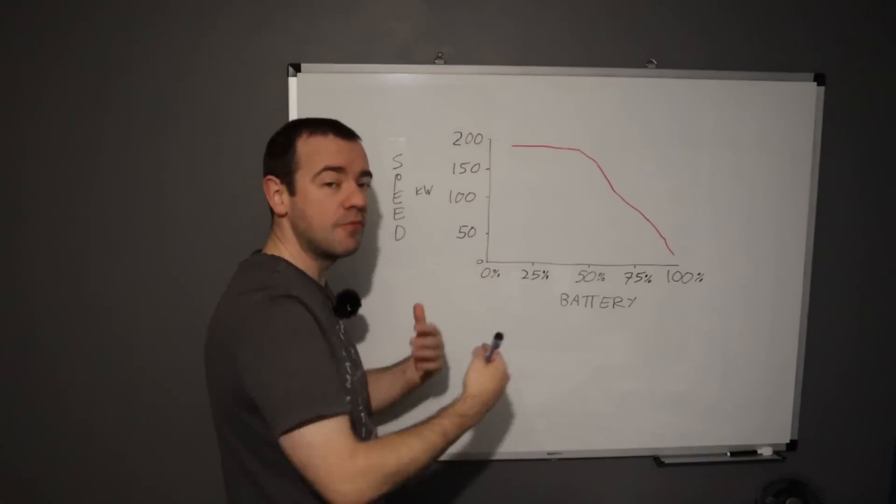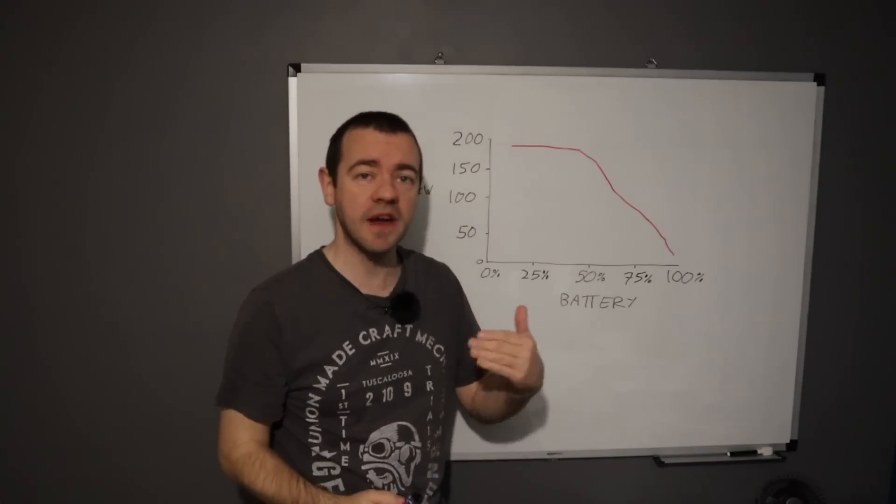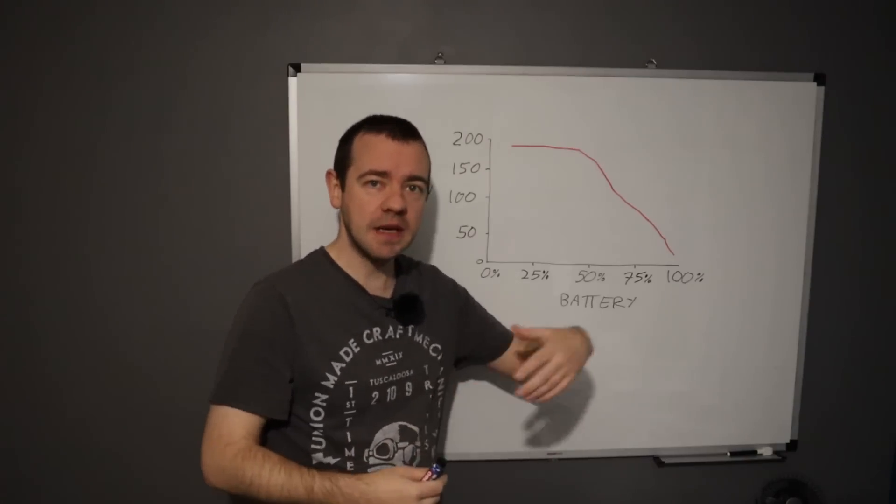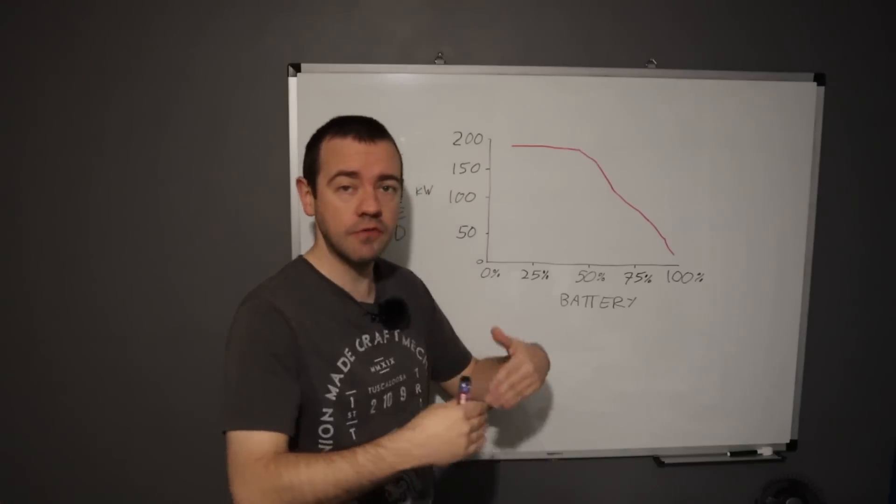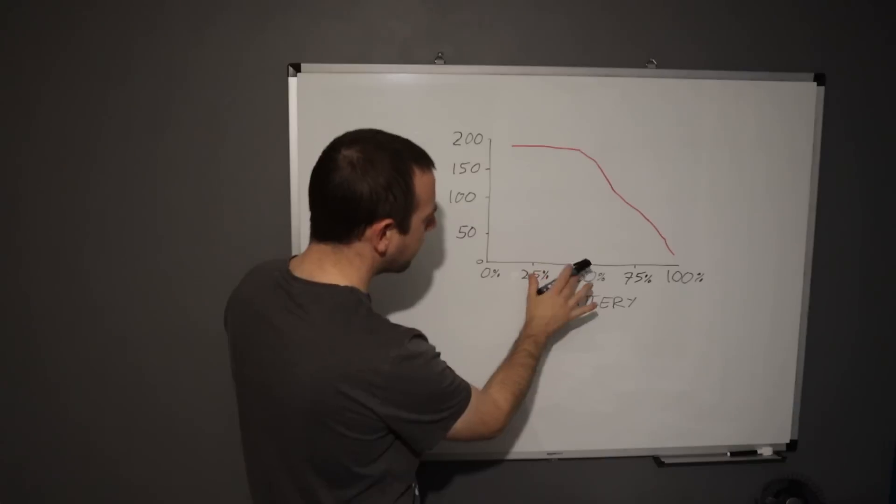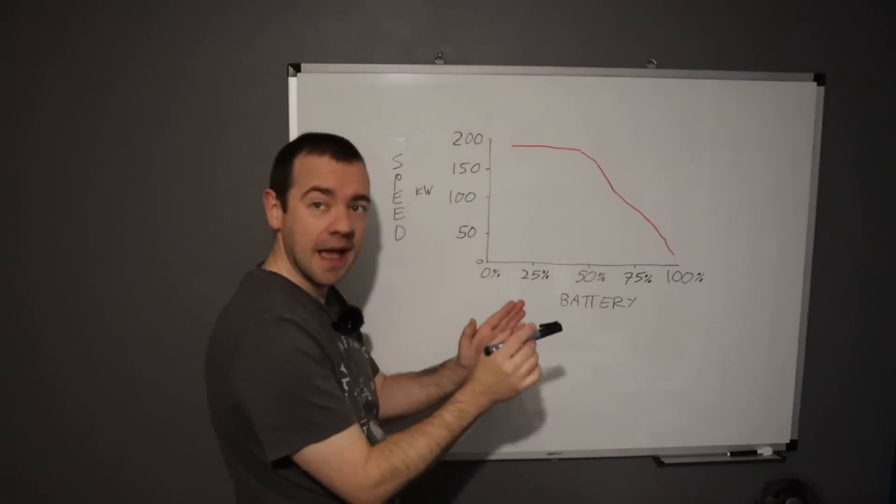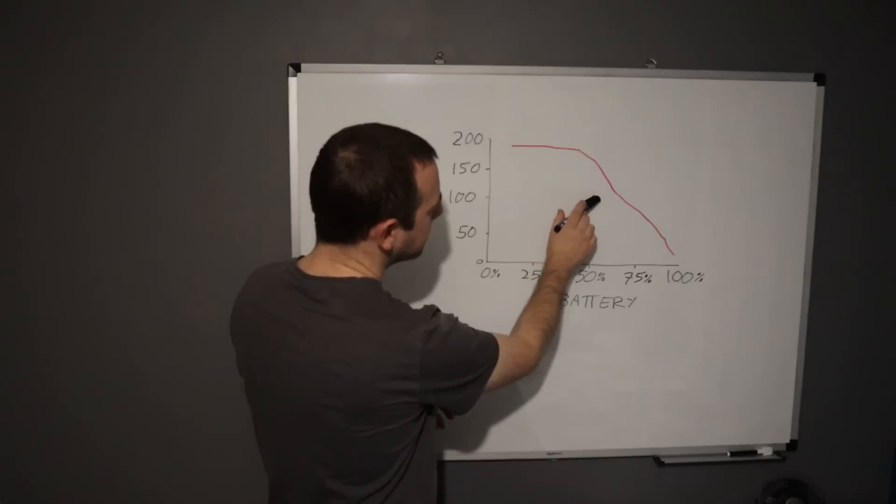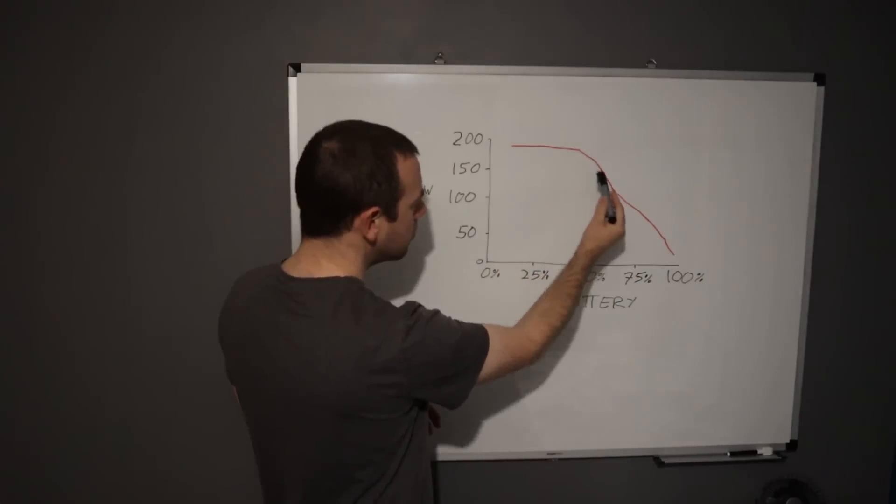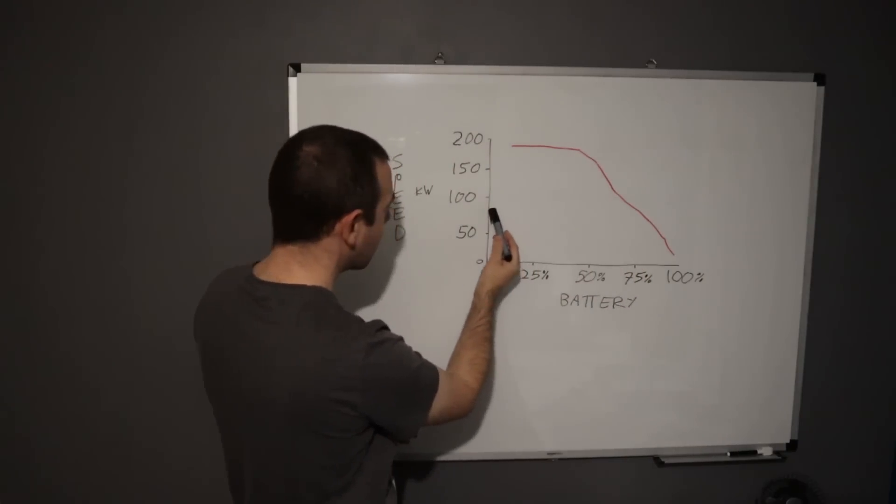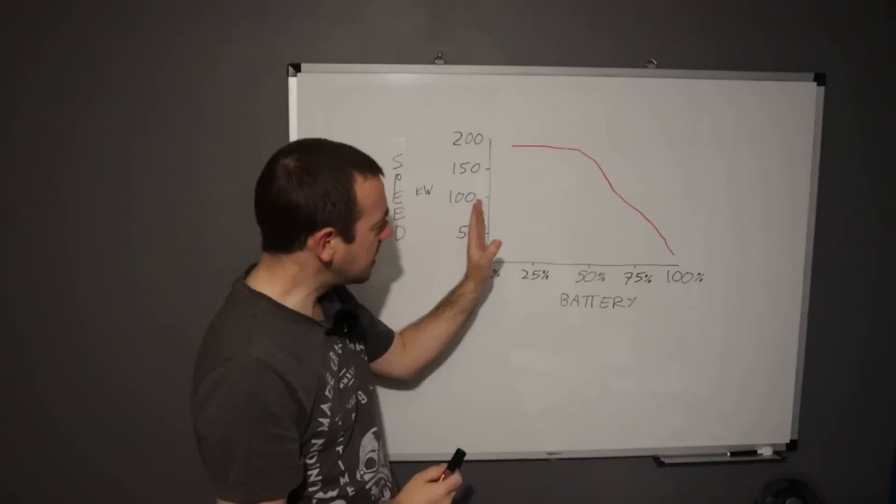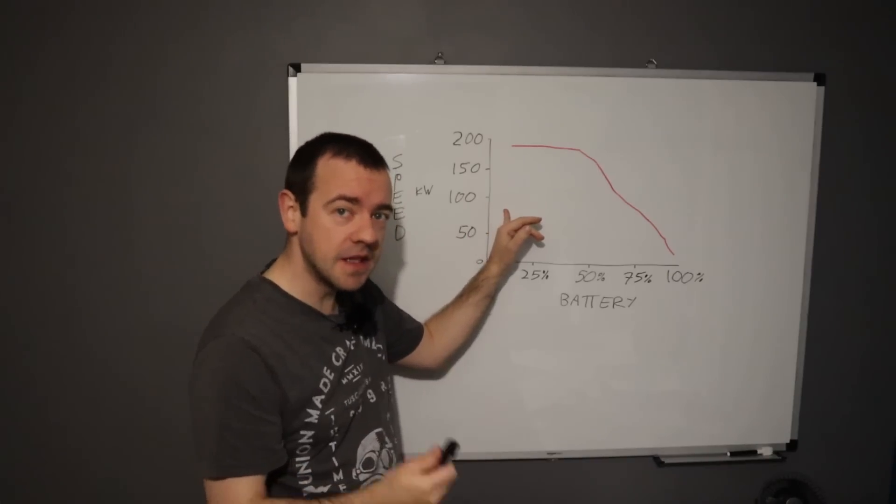Up to about 45-50% you'll get pretty much close to what the manufacturer states the car is capable of, assuming the temperature of your batteries and so forth are where they need to be. Once you get above the 45-50% mark, the speed drops off to the point where you get above 75% and we've gone from nearly 200 kilowatts to around 70 odd in this particular example.